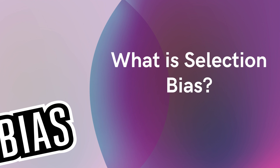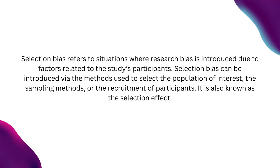Selection bias refers to situations where research bias is introduced due to factors related to the study's participants. Selection bias can be introduced via the methods used to select the population of interest, the sampling methods, or the recruitment of participants. It is also known as the selection effect. Selection bias may threaten the validity of your research, as the study population is not representative of the target population.